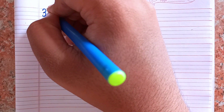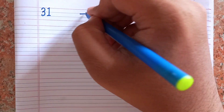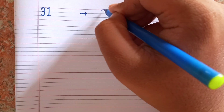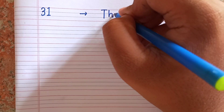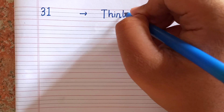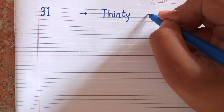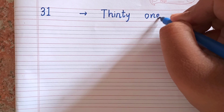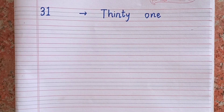After thirty, the next number is thirty-one — 3-1. The spelling of thirty-one is T-H-I-R-T-Y O-N-E. 31.